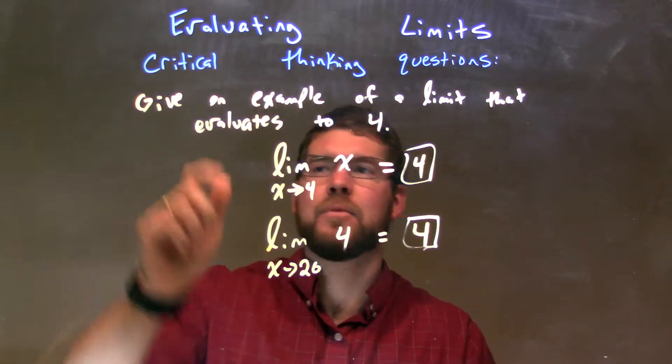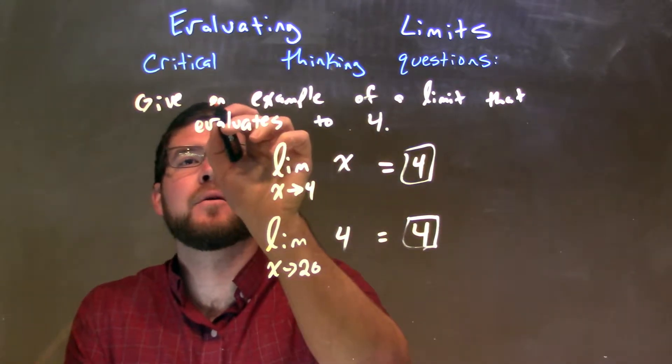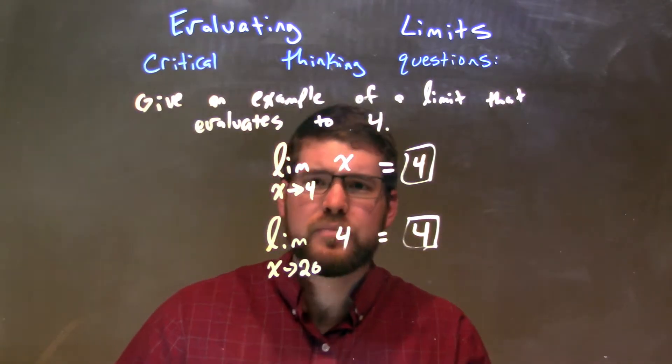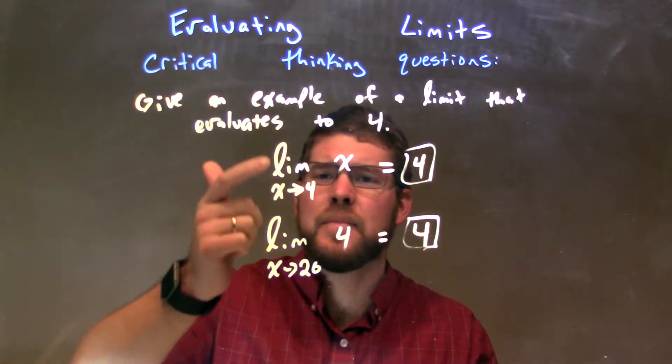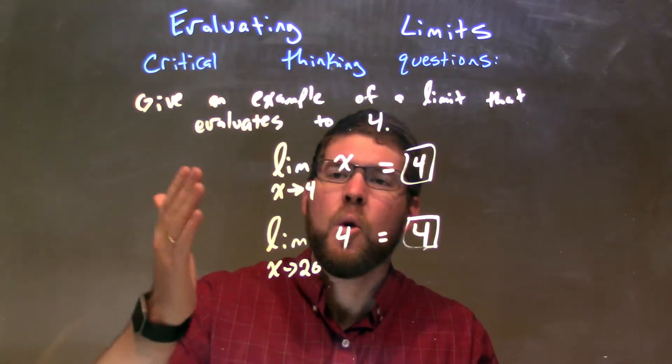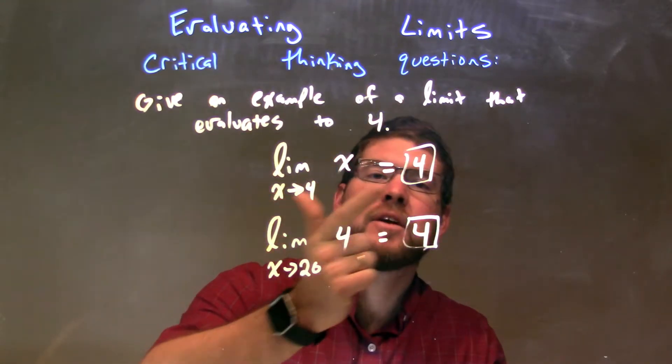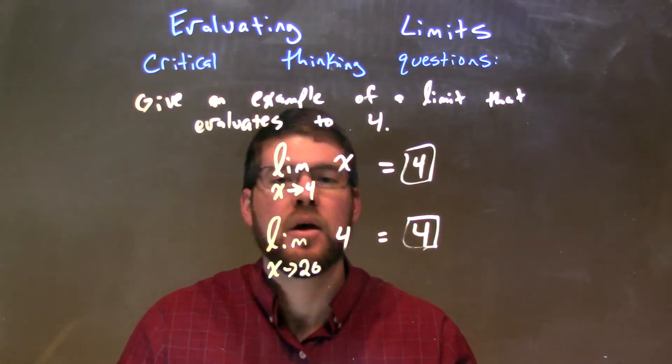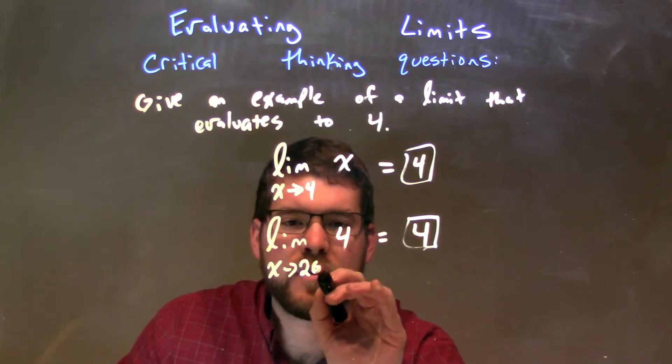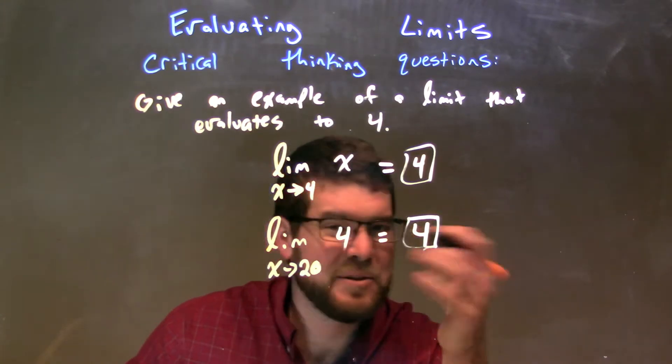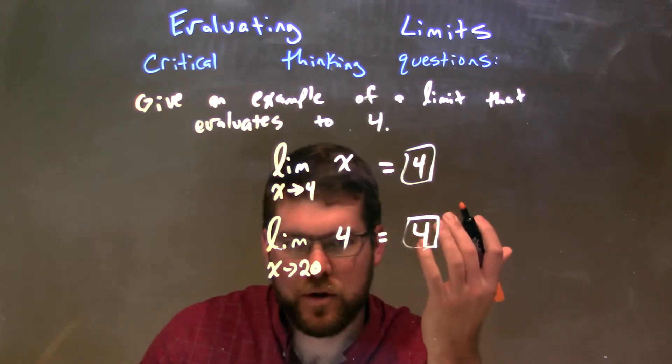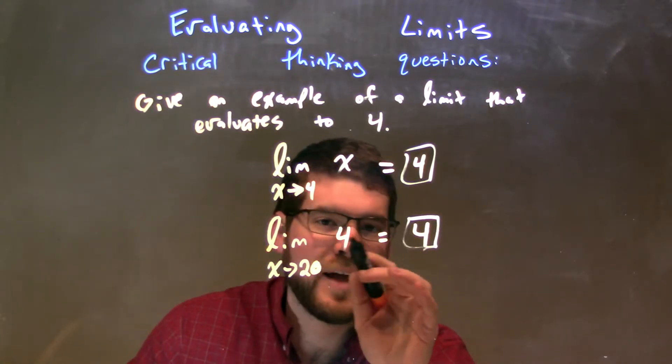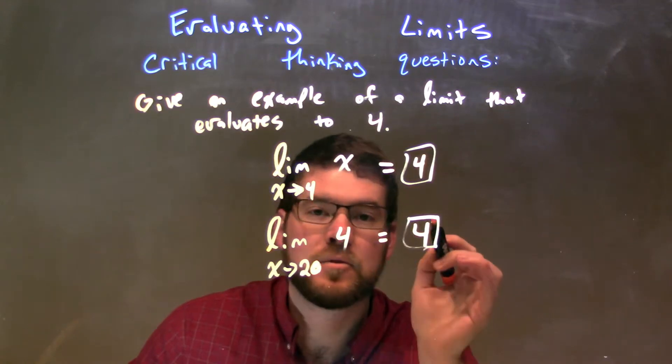We'll give an example of a limit that evaluates to 4. Well, the first one I showed is the limit as x approaches 4 of x. We can plug 4 directly into x, giving us an output of 4. That's what the limit is equal to. Our second example is limit as x equals 20, or whatever, maybe 50, negative 1,000. Limit as x approaches that 20 of 4 is just that constant which is 4, which equals 4.